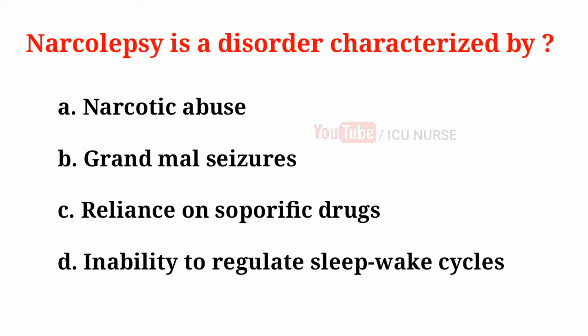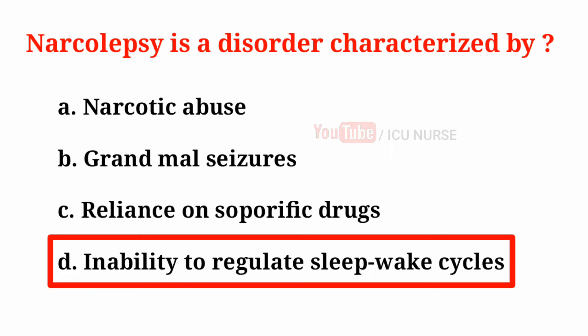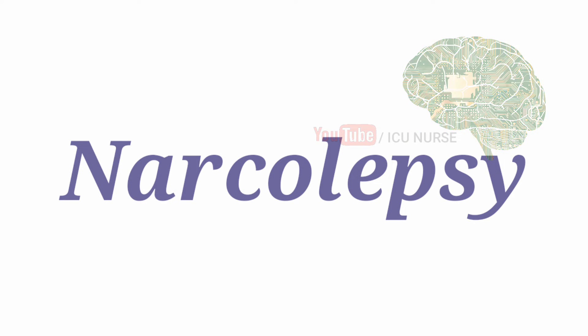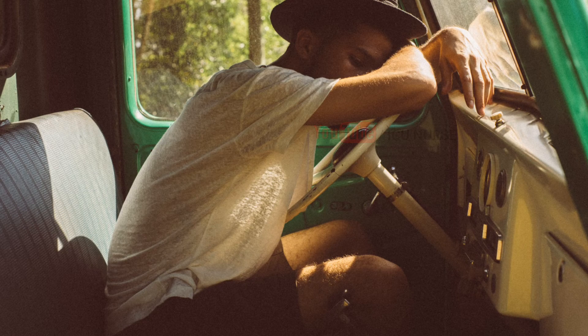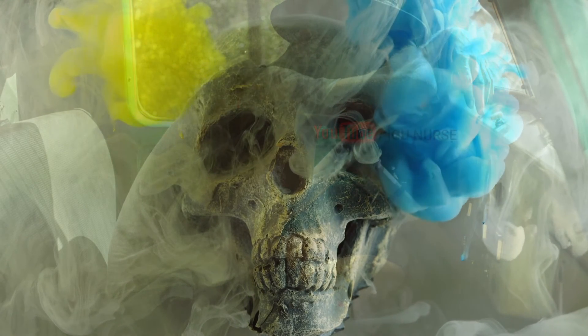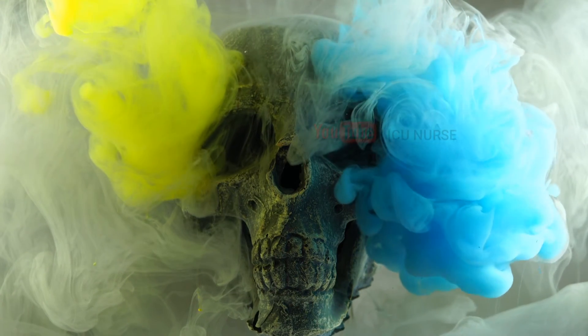Narcolepsy is a disorder characterized by: A. Narcotic abuse, B. Grand mal seizures, C. Reliance on soporific drugs, D. Inability to regulate sleep-wake cycles. The correct answer is D. Inability to regulate sleep-wake cycles. Narcolepsy is a neurological disorder causing irresistible bouts of sleep, ranging from seconds to minutes throughout the day. Along with excessive daytime sleepiness, persons with narcolepsy also suffer from cataplexy, hallucinations at sleep onset or awakening, and transient complete paralysis at the onset or end of sleep.